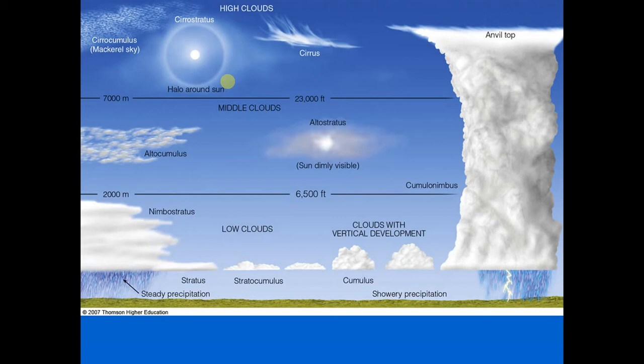Cirrostratus clouds can occasionally form ahead of an advancing mid-latitude cyclonic storm and can be used to help predict rain or snow within 12 to 24 hours, especially if they are followed by middle clouds. Often one of the precursors to an incoming storm is cirrostratus clouds — if you see these high clouds and then several hours later you start seeing middle clouds, that's a clue a weather system could be coming.